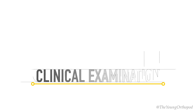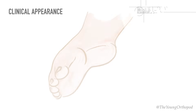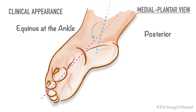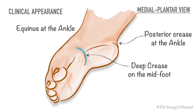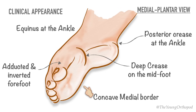Before proceeding to the pathoanatomy, let us quickly review the clinical picture of the clubfoot. On examination from the medial plantar side, you can see equinus at the ankle joint, a posterior crease at the ankle joint, a deep cleft on the medial plantar aspect of the midfoot. The medial border of the foot is concave and the forefoot is adducted and inverted.